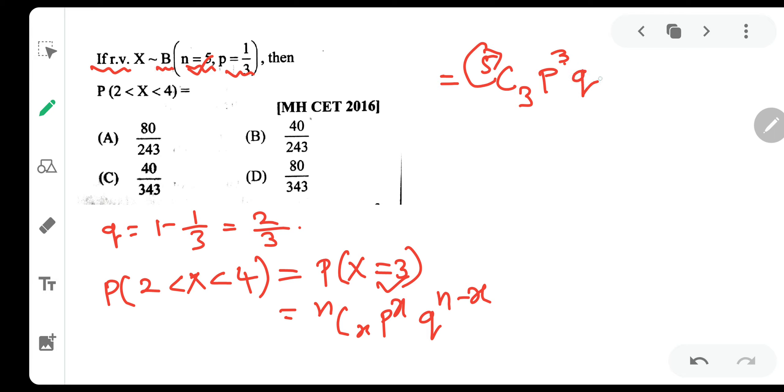So 5C3 can also be written as 5C2, and p is 1 by 3, 1 by 3 cube, and q is 2 by 3, 2 by 3 square. 5C2 we already know is 10, 1 by 3 cube is 1 by 27, and 2 by 3 square is 4 by 9.